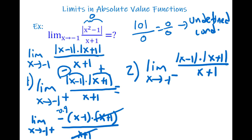Putting x = −1: −(−1 − 1) = −(−2) = +2. So when x goes to −1 from the right, the limit is positive 2.